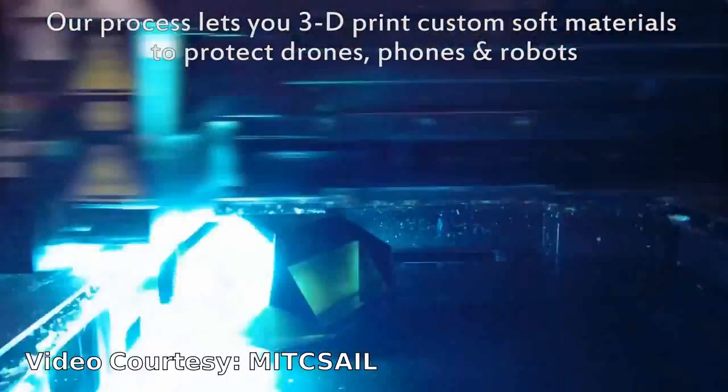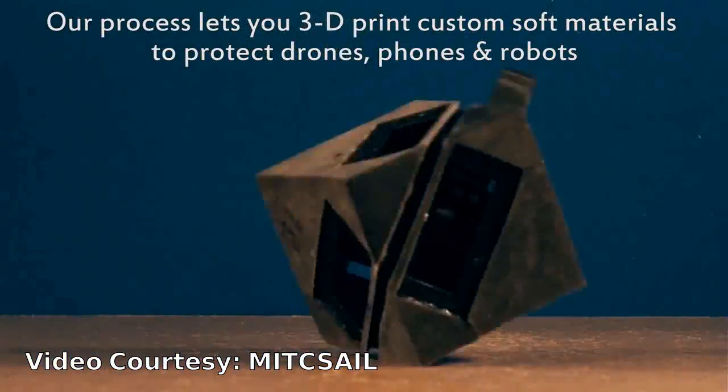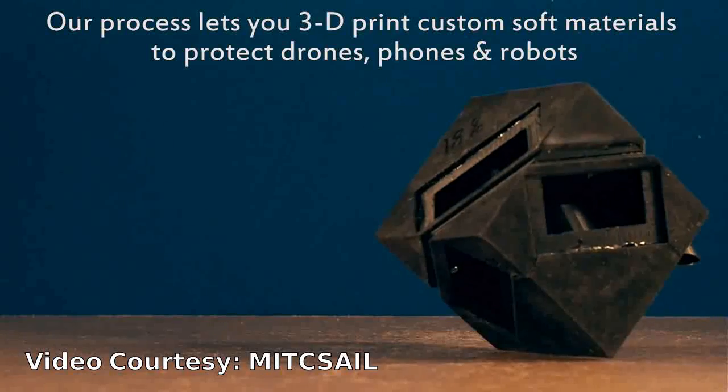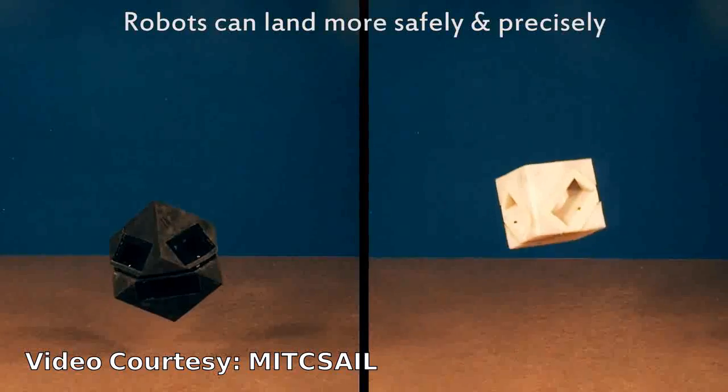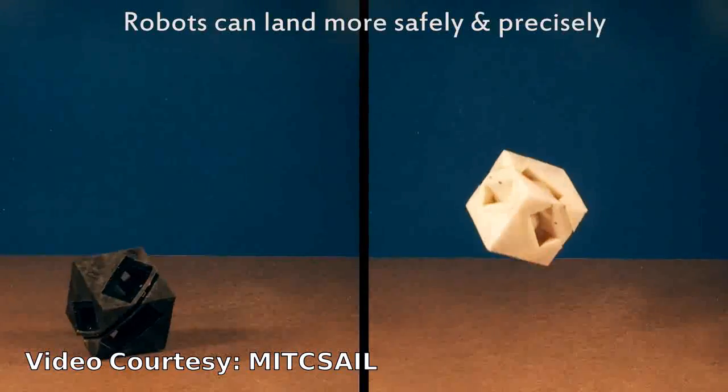For example, after 3D printing a cube robot that moves by bouncing, the researchers outfitted it with shock-absorbing skins that use only 1 in 250 the amount of energy it transfers to the ground.